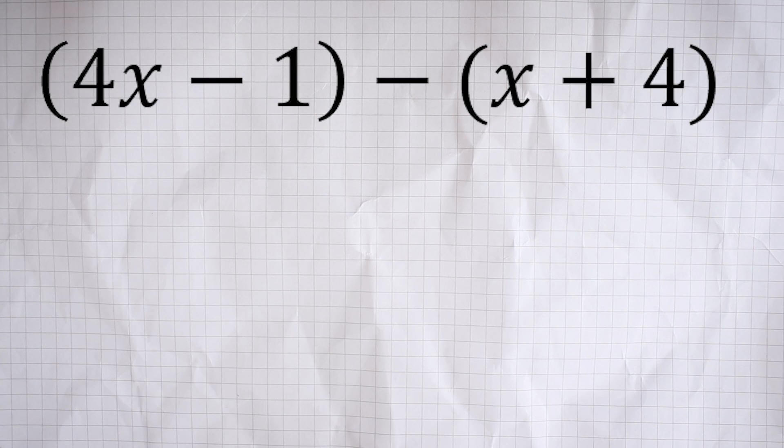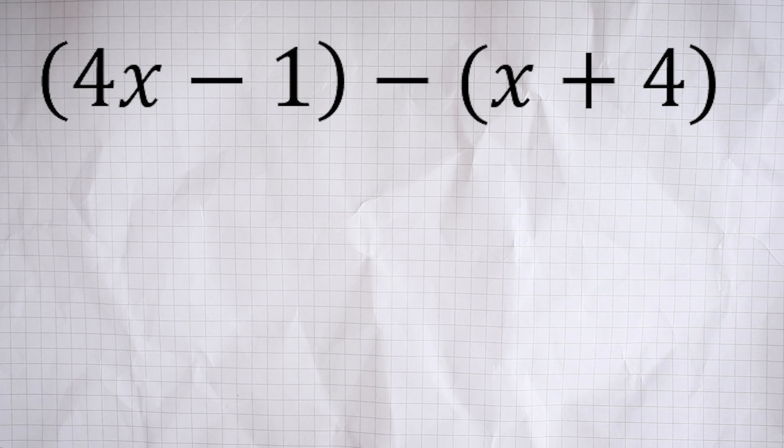So the third thing I want to look at involves brackets, in particular when you're subtracting brackets. So let's say we've got something like this: 4x minus 1, take away, x add 4. So again, I want you to take a moment, pause the video if you need to, and just work this out yourself and see what you would get for this.